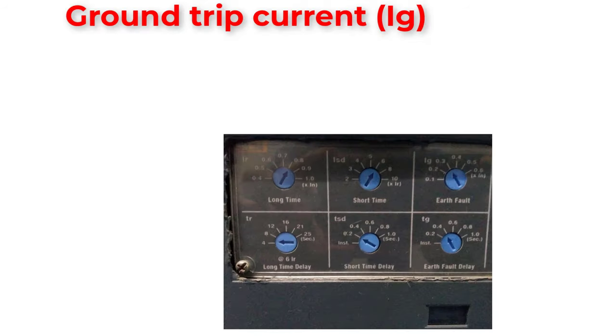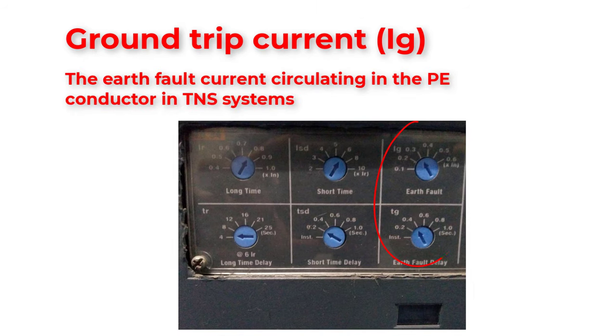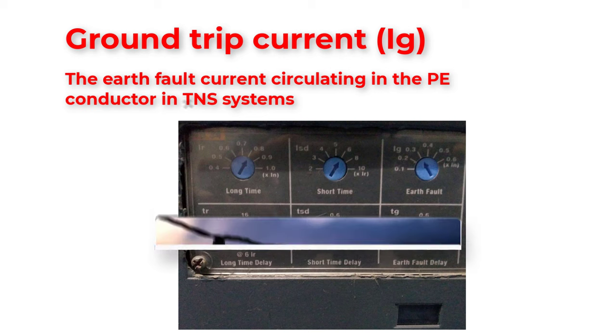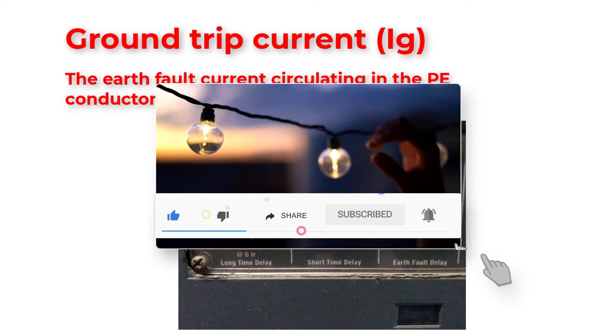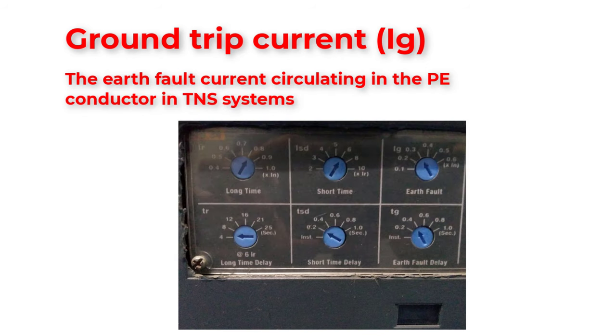Ground trip current is the earth fault current circulating in the protective earthing conductor. In the next video, we will cover the terminologies of MCCB. And in the upcoming video, we will learn how to read the nameplate of MCCB. Consider subscribing to Electrical Engineering Planet channel to support our community. Also, don't forget to share, like and let knowledge enlighten your world. Thank you very much for watching.